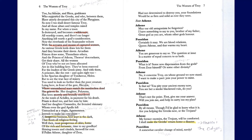'Well then, most prosperous of cities, home of the rich and fortunate, it is time to say goodbye. Shining towers and citadels, farewell forever. If Pallas Athena, daughter of Zeus, had not determined to destroy you, your foundations would be as firm and solid as ever they were.' Interesting to note that Poseidon blames Athena — blame is an important theme throughout this text. We see that many of the characters look to blame others for the events that have happened. Then we get the stage direction of Athena entering.